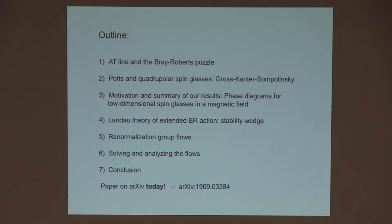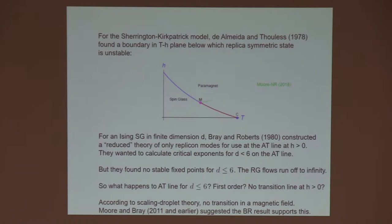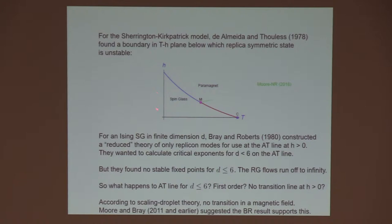For the Sherrington-Kirkpatrick model, de Almeida and Thaulis discovered a boundary in the temperature magnetic field plane that looks at least a bit like this. It's actually in the infinite range model. It goes off to infinity rather than hitting the axis here, but it looks a bit like this. It separates the paramagnet from the spin glass phase in which presumably replica symmetry is broken.